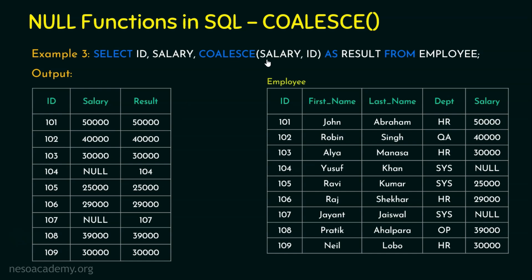For the second row with salary 40000 and id 102, the first non-null value is 40000, so salary is returned. COALESCE always returns salary as output if salary is not null. If salary is null, the first occurring non-null value will be id, so id is returned as the result — that is why whenever salary is null, we get the id value. If both salary and id are null, then COALESCE returns null. COALESCE returns the first occurring non-null value in the set of expressions; if all arguments are null, it returns null.